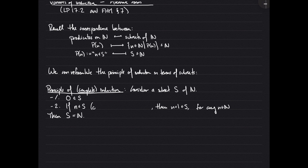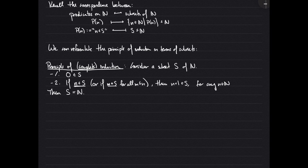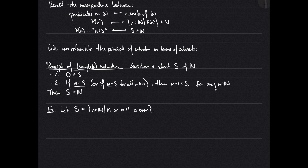To give the analog of complete induction, we would say not just that n is in S, but that m is in S for every m less than or equal to n, and then n+1 is in S. Now let's look at an example that corresponds to one we saw with regular induction, but now talking about it in terms of subsets rather than predicates. We let S be the subset of N of all those natural numbers n such that n or n+1 is even, and we want to prove that this subset S contains all natural numbers.